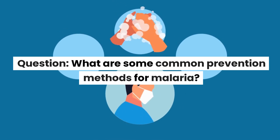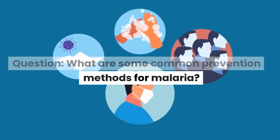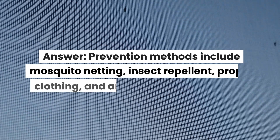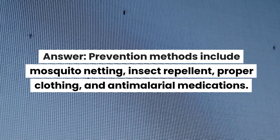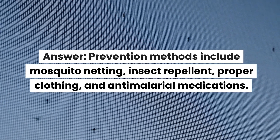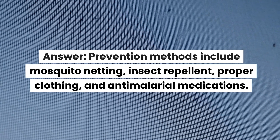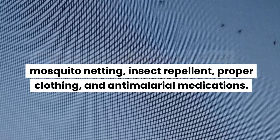Question: what are some common prevention methods for malaria? Answer: prevention methods include mosquito netting, insect repellent, proper clothing, and anti-malarial medications.